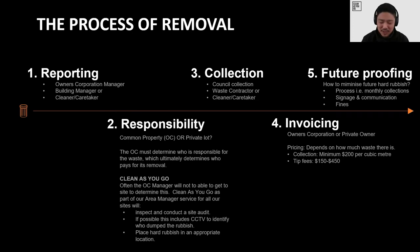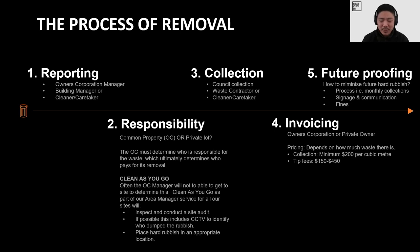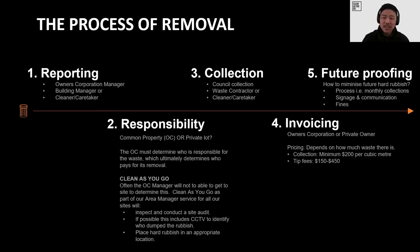Future proofing is probably the most important step to minimize future hard rubbish at your property. As Clean As You Go, managing hundreds of properties, we've found a few ways to minimize future dumping. One is process — if your building is big enough, you can build in a process where residents are told a procedure of when to dump hard rubbish. For example, at a site in Croydon, residents put rubbish out on the nature strip themselves, we take pictures and call the council to collect it, under an arrangement with the council.